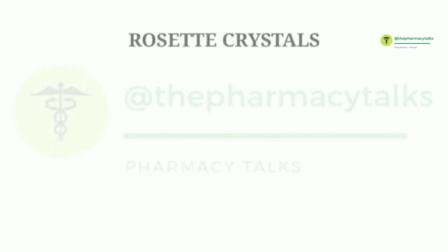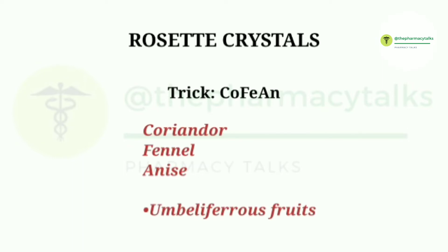The next type of calcium oxalate crystals is rosette crystals. The trick to remember the secondary metabolites of this type is 'Coffeine.' It includes coriander, fennel, and anise. All the umbelliferous fruits also belong to the rosette type of calcium oxalate crystals.